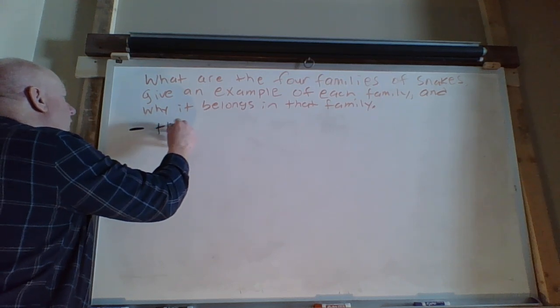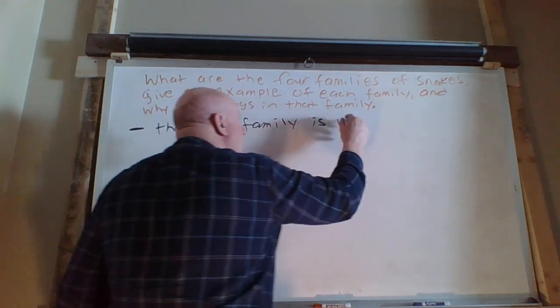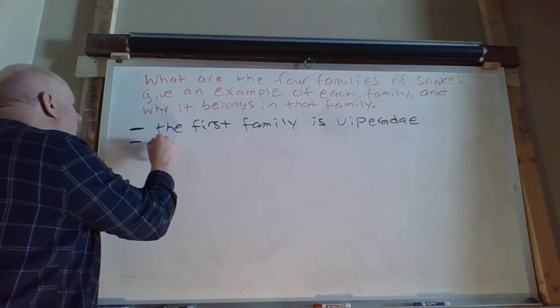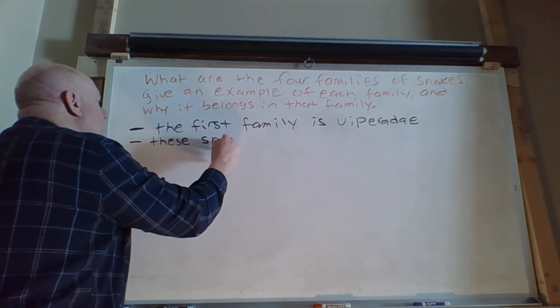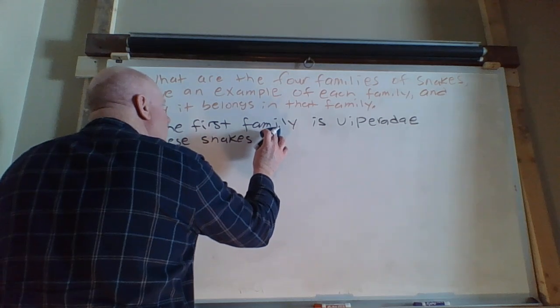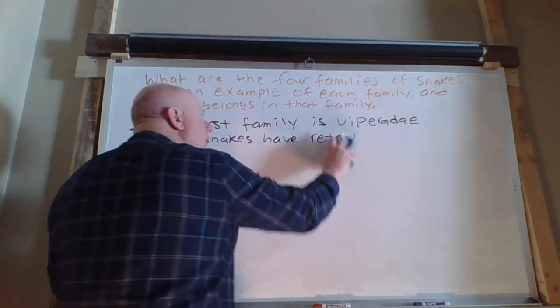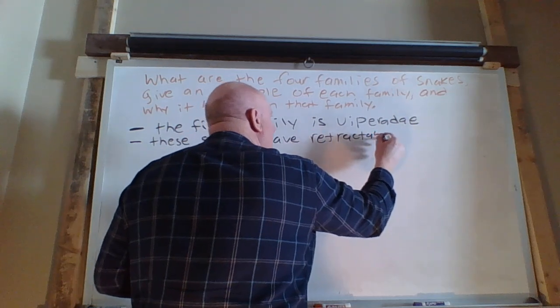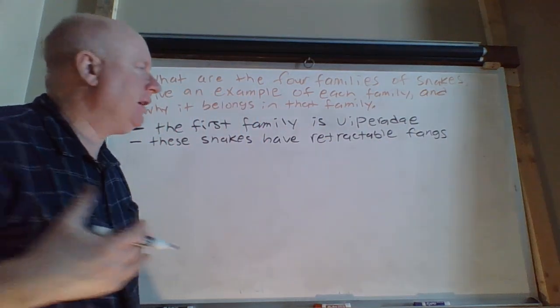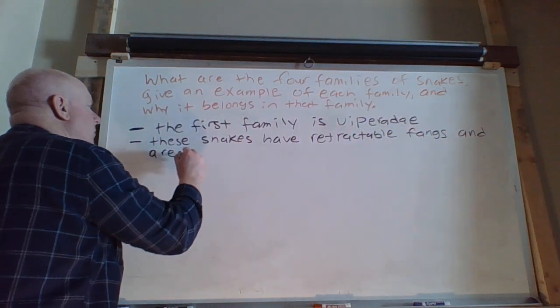The first family is Viparidae. These snakes have retractable fangs. And as you would guess, if we're dealing with those that have fangs, they are venomous.